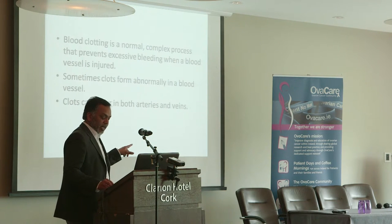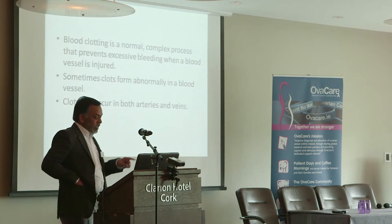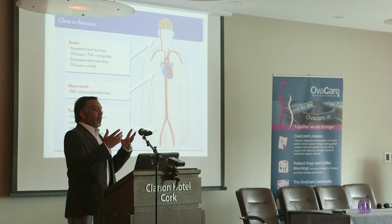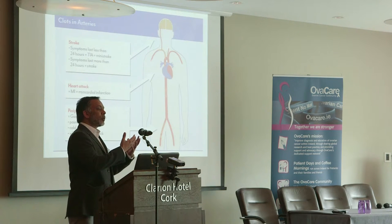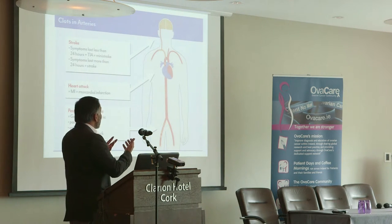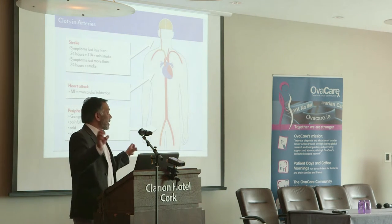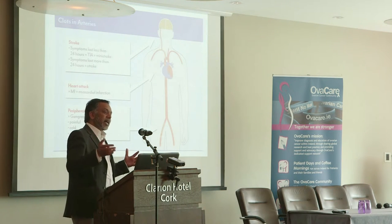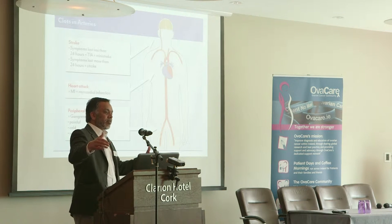Clots can be in arteries as well as in veins. Arteries are the vessels that take good blood from the lungs to all parts of the body to supply oxygen and all good metabolites. The veins are the ones which bring back all the blood towards the lungs. So, arteries take blood from the lungs to the tissues and veins bring it back.